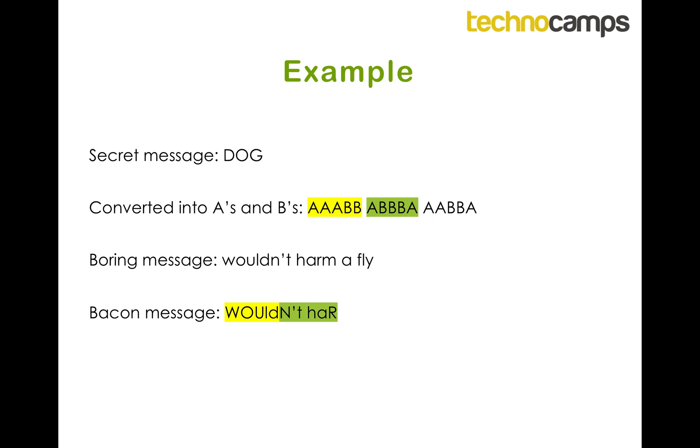And we repeat one more time, so we've got capital A, capital A, B, BA, so we should have capital M, capital A, lowercase f, lowercase l, and uppercase y. Okay, and that's how we do a Bacon Cipher.